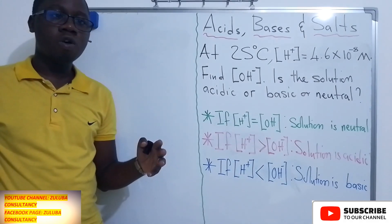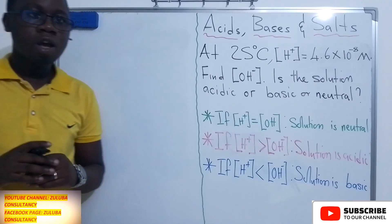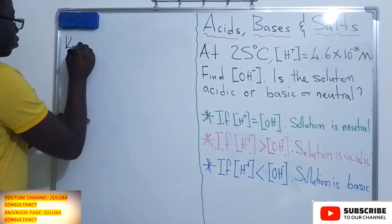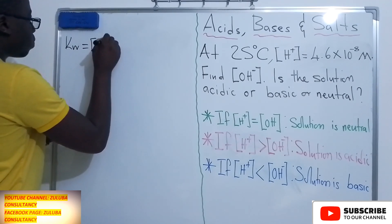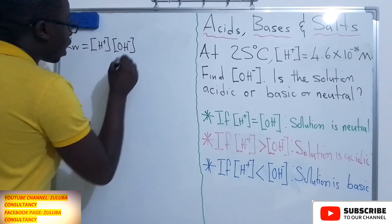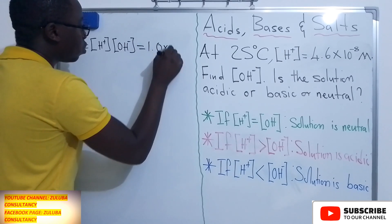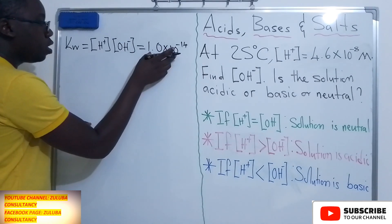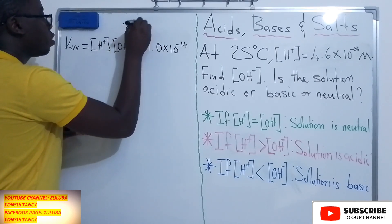The first thing we need to know is: what is the value of KW at 25 degrees Celsius? The equation for KW is: KW, which is the equilibrium constant, is equal to the concentration of H⁺ multiplied by the concentration of OH⁻. At 25 degrees Celsius, this is equal to 1.0 times 10 to the power negative 14.